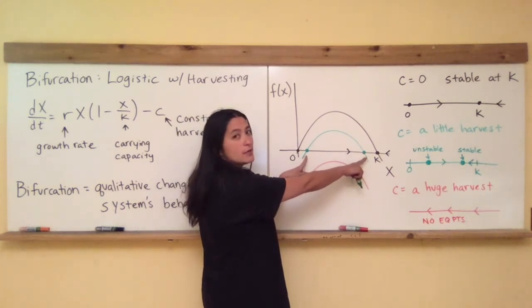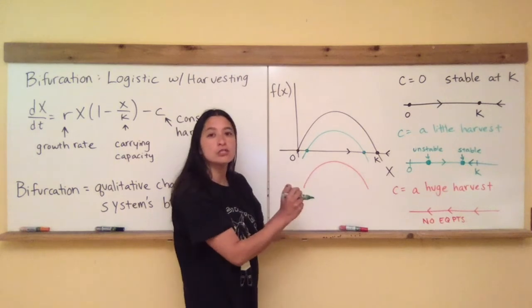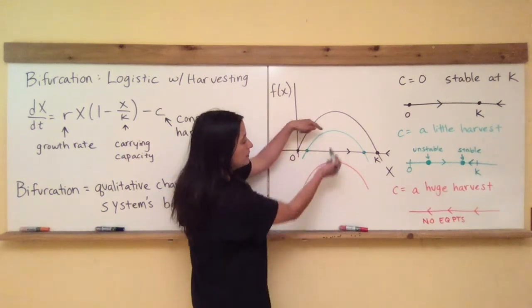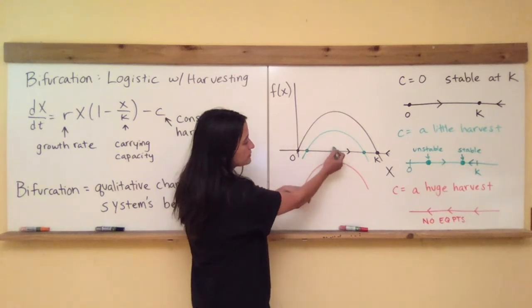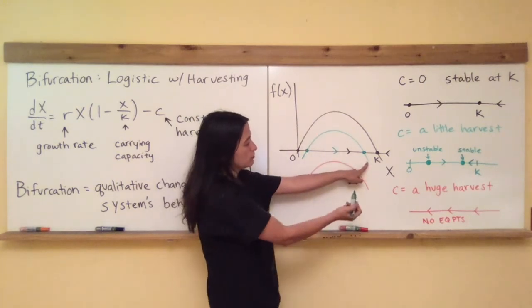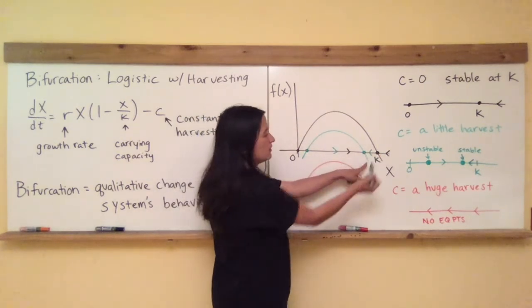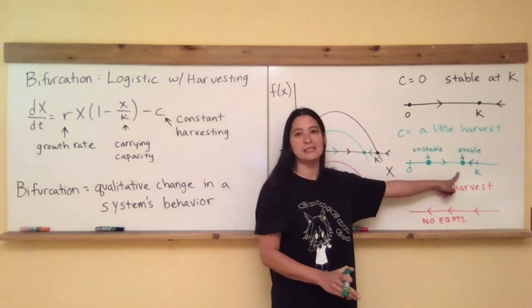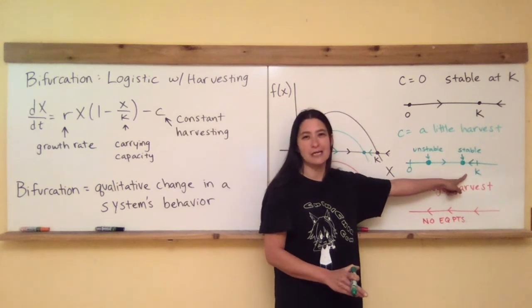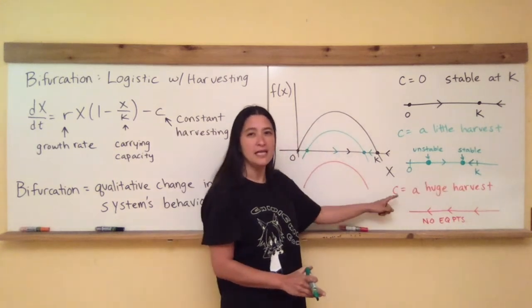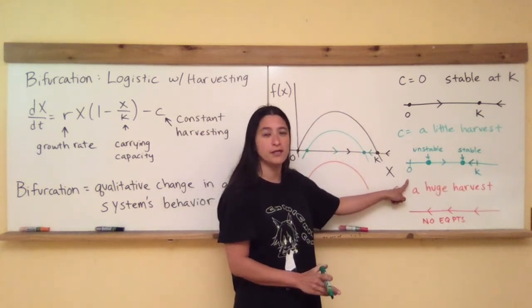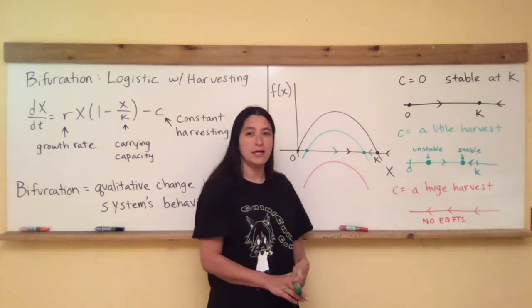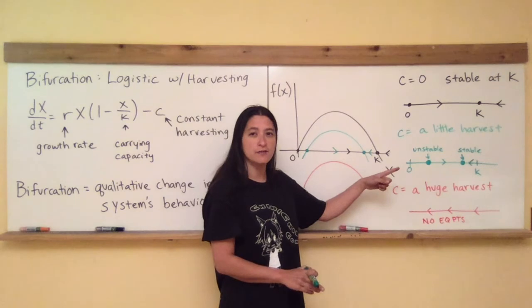However, the stability still remains the same in that the green graph is positive here, and the green graph is negative there. And so the arrows are pointing to a stable equilibrium point that's at some value, just a little bit less than the carrying capacity, and an unstable equilibrium point which has a value that's a little bit greater than zero. So that's what the phase line looks like for a little harvest.